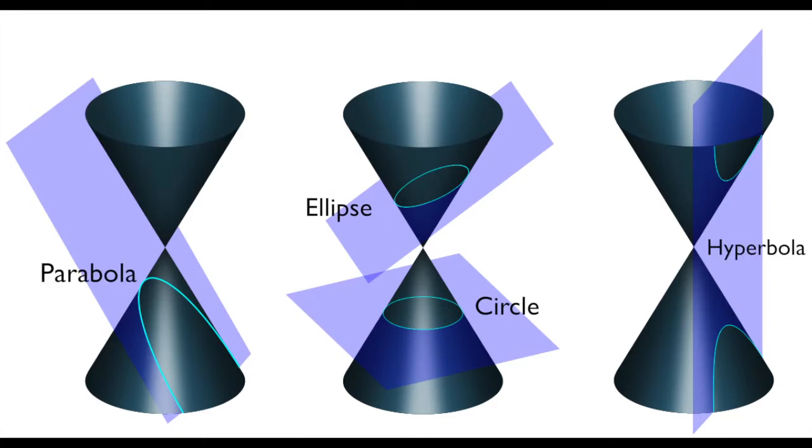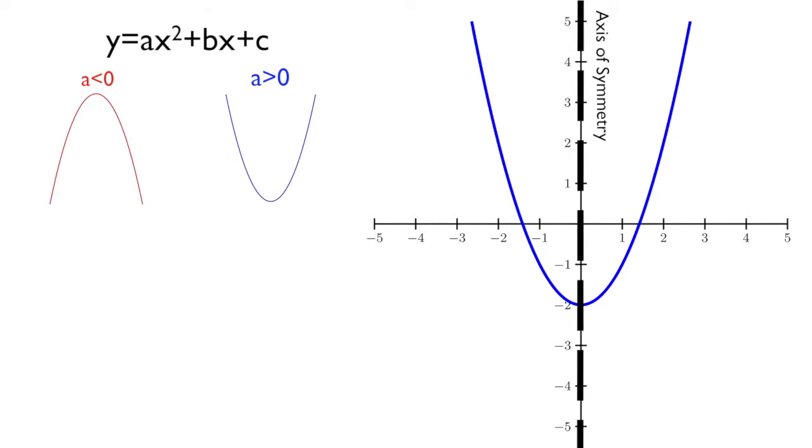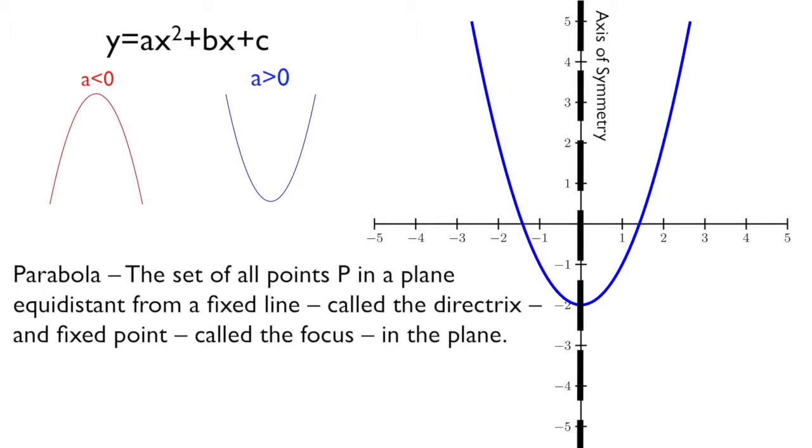We can always define a parabola by the simple y equals ax squared plus bx plus c, but a parabola can be defined more specifically as a set of all points p in a plane equidistant from a fixed line called the directrix and a fixed point called the focus in the plane.